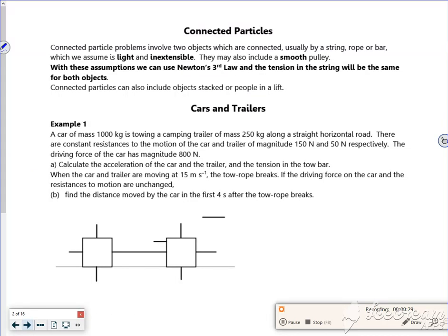Right, so connected particles - we've got stuff that's attached together, maybe by string, rope, bar, tow bar, you know that type of thing. So we always assume that they're light and inextensible, so the bits move together. Might have a pulley, that's always smooth as well, to make these assumptions easier for us.